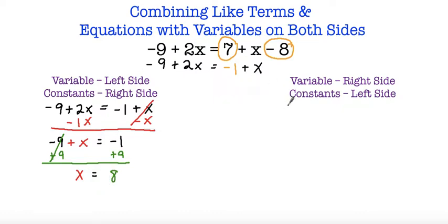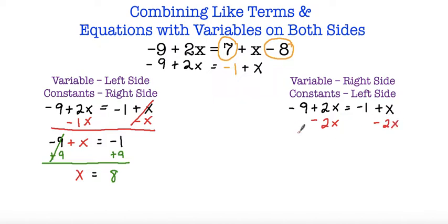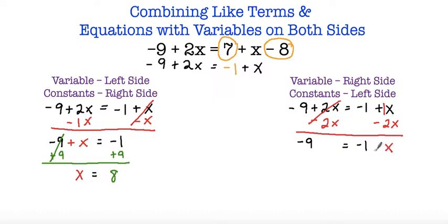Now we're going to do the same thing except this time we're moving variables to the right side and constants to the left side. So negative 9 plus 2x is equal to negative 1 plus x. If I want to move variables to the right side I'm going to subtract both sides by 2x. I'm left with negative 9 — these cancel out because they're opposites. So negative 9 is equal to negative 1, and here I have positive x and negative 2x. Since the signs are different I subtract, ending up with 1x or just x, and I keep the sign of the number with the greatest absolute value which is negative 2. So I end up with negative 1 minus x.